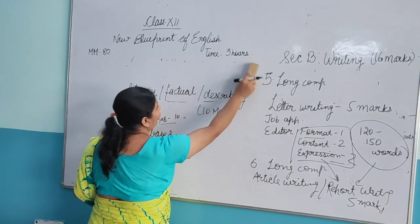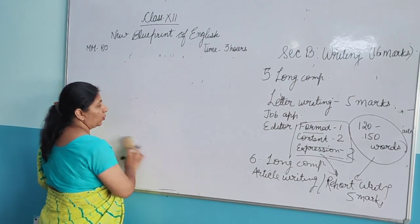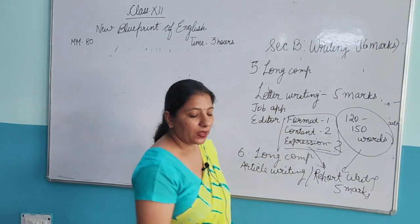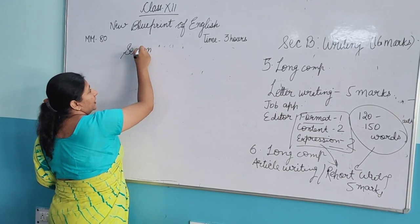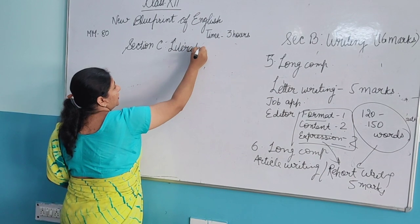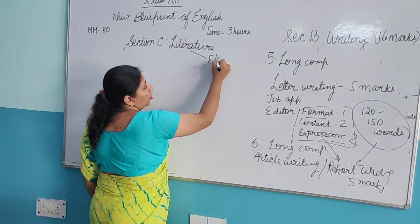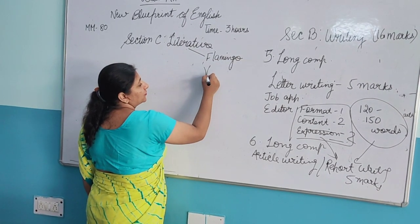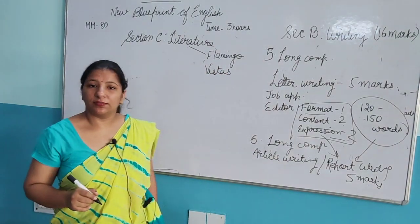I hope you have understood up to here. If you have any problem or query, you can write in the comment box. Now let us start Section C — that is literature. In literature you have two books: one is Flamingo, the main book, and another is Vistas, the supplementary book. Literature is of 44 marks this time.